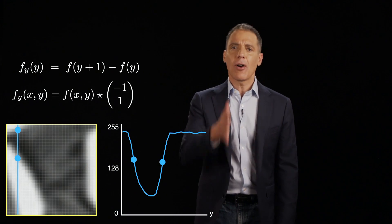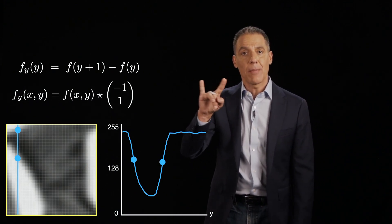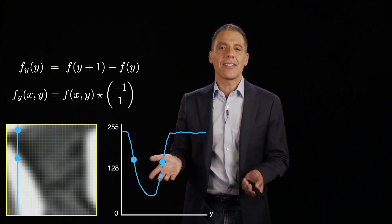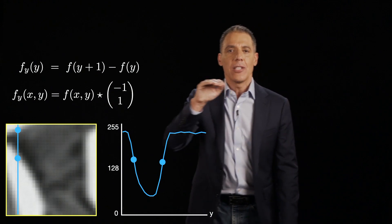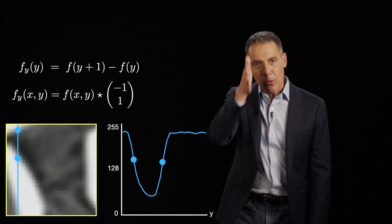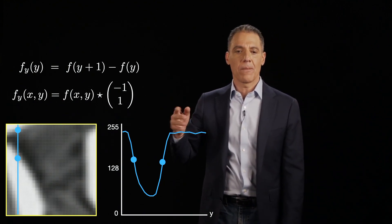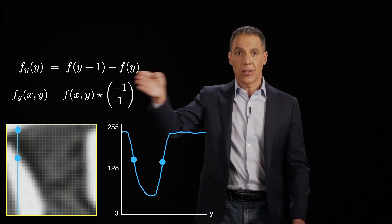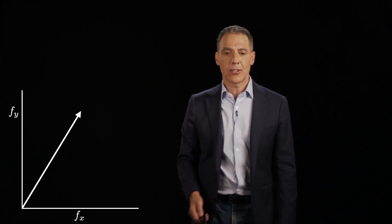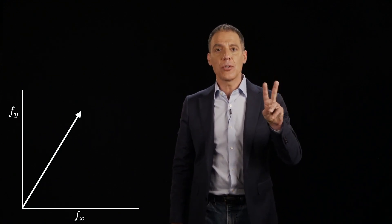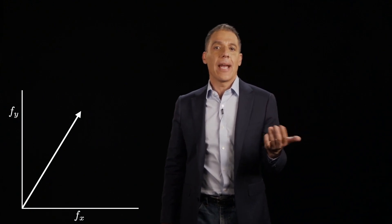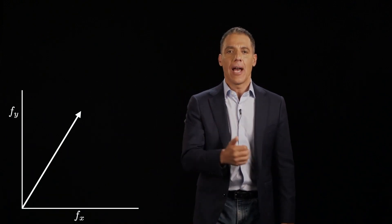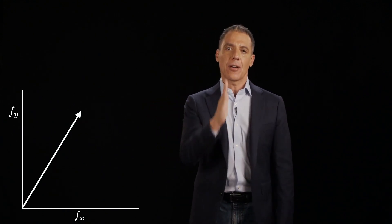The y derivative convolves in the other direction. Where I convolved with a row vector [-1, 1] for x, I now convolve with a column vector [-1, 1] for y, which computes differences in the vertical direction. I do two convolutions and get two derivatives, fx and fy. At each point I have a vector-valued quantity: how much are things changing in the horizontal direction, and how much in the vertical direction.